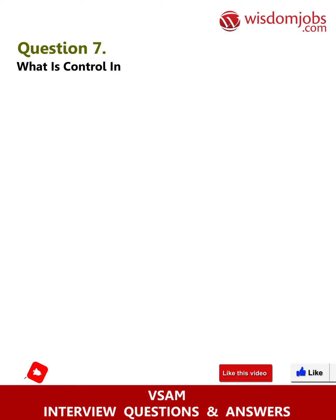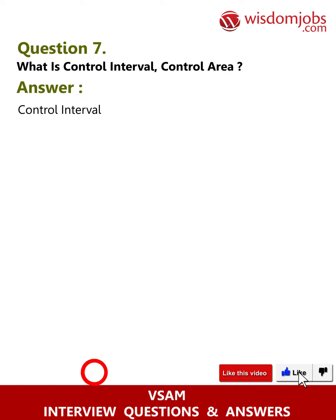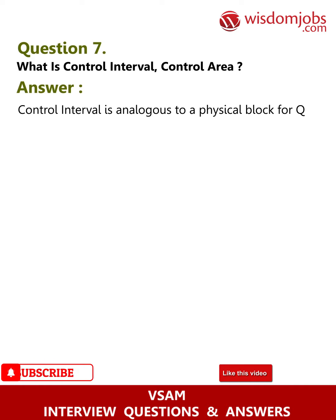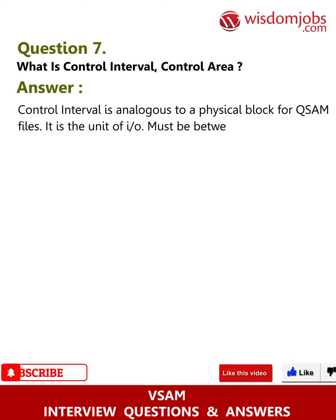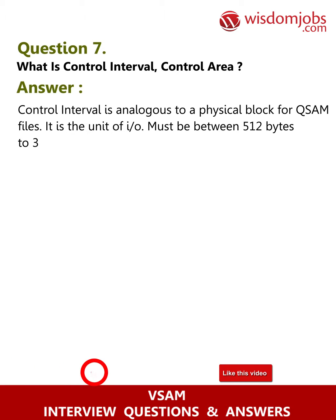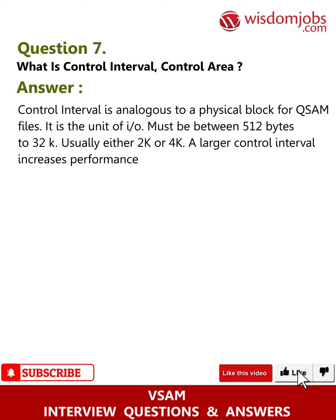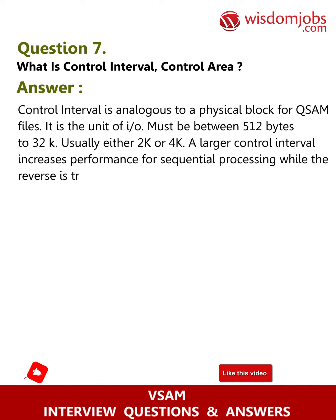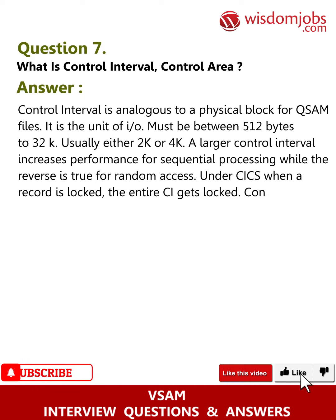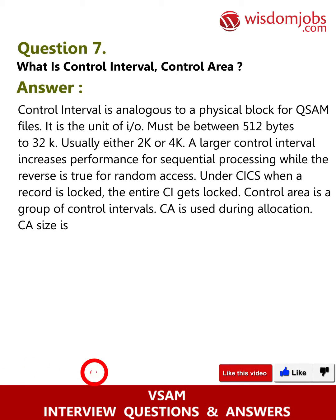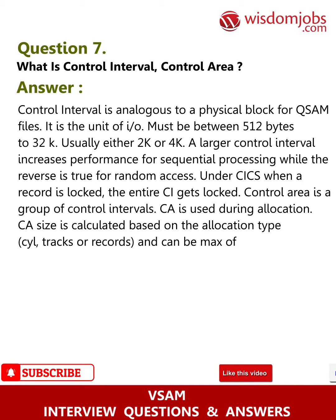Question 7: What is Control Interval and Control Area? Answer: A Control Interval (CI) is analogous to a physical block for VSAM files. It is the unit of I/O and must be between 512 bytes to 32K — usually either 2K or 4K. A larger CI increases performance for sequential processing, while the reverse is true for random access. When a record is locked, the entire CI gets locked. A Control Area (CA) is a group of Control Intervals, used during allocation. CA size is calculated based on allocation type — cylinders, tracks, or records — and can be a maximum of one cylinder.